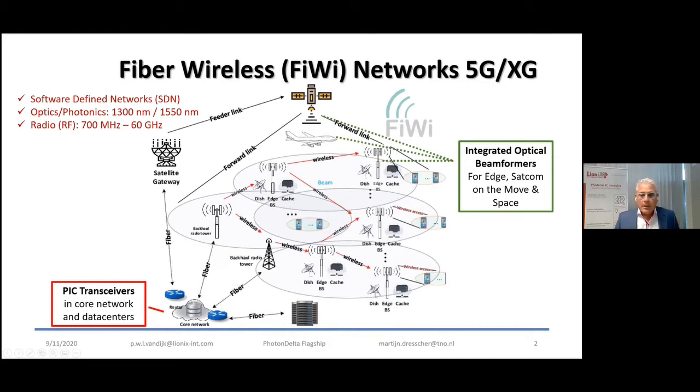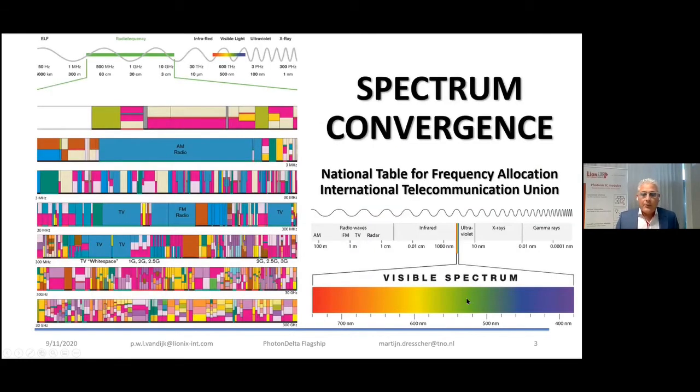And what we see now is actually a convergence of spectrum with the radio spectrum here in frequencies between 500 megahertz and 10 gigahertz and the optical spectrum at terahertz. This picture shows all the bands that are currently used in radio communication. So for radio, for TV, for security, for probing, for satellite communication.